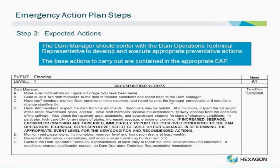While all key personnel are being contacted, the dam manager needs to confer with dam operations technical representatives to develop and execute appropriate preventative action. Within the predetermined Emergency Action Plan for the event type and level, there is a list of base actions that should be carried out. These base actions start the response to the emergency and make sure actions are underway, preventing the circumstance where people panic and no actions are undertaken, thus wasting time. Throughout the emergency, things will continue to change and other actions will need to be undertaken as determined by the emergency management team, since it is impossible to list all actions within an EAP. Another advantage of having EAPs defined is that the dam management team can conduct training on these EAPs to ensure all personnel are aware of their required actions in the rare case when an emergency actually occurs.